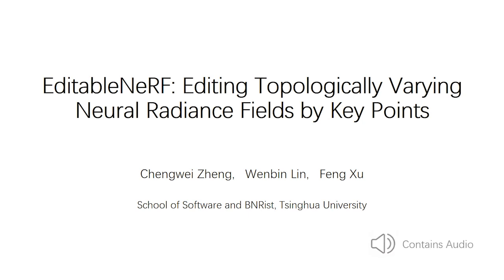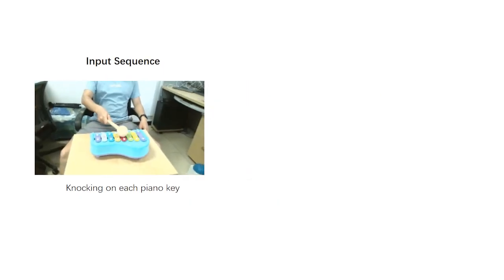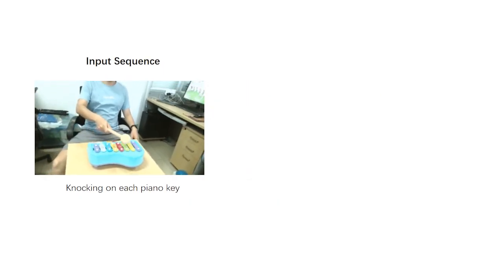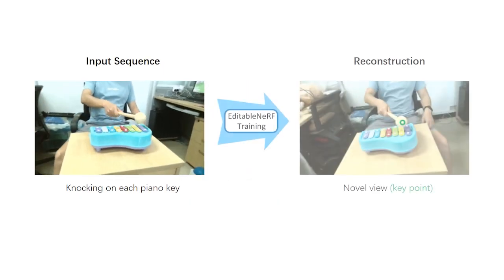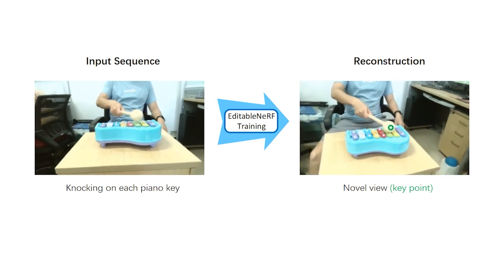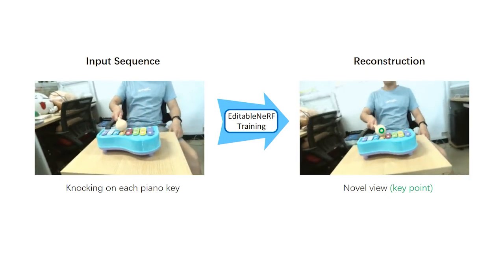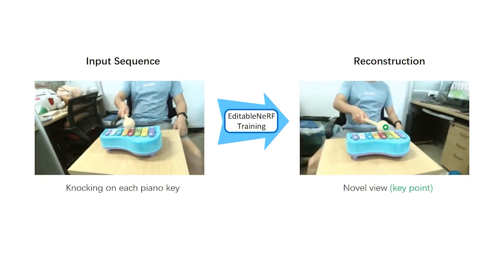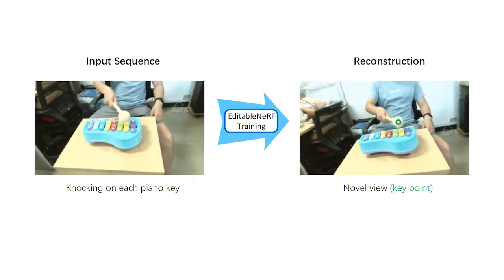We propose Editable NeRF: editable topologically varying neural radiance fields that enable end users to easily edit dynamic scenes by key points. Input with an image sequence from a single camera, our network is trained fully automatically and models topologically varying dynamics using surface key points.